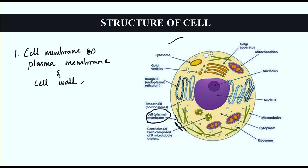The second important region is the nucleus. Inside the nucleus there is a nucleolus which consists of chromosomes.